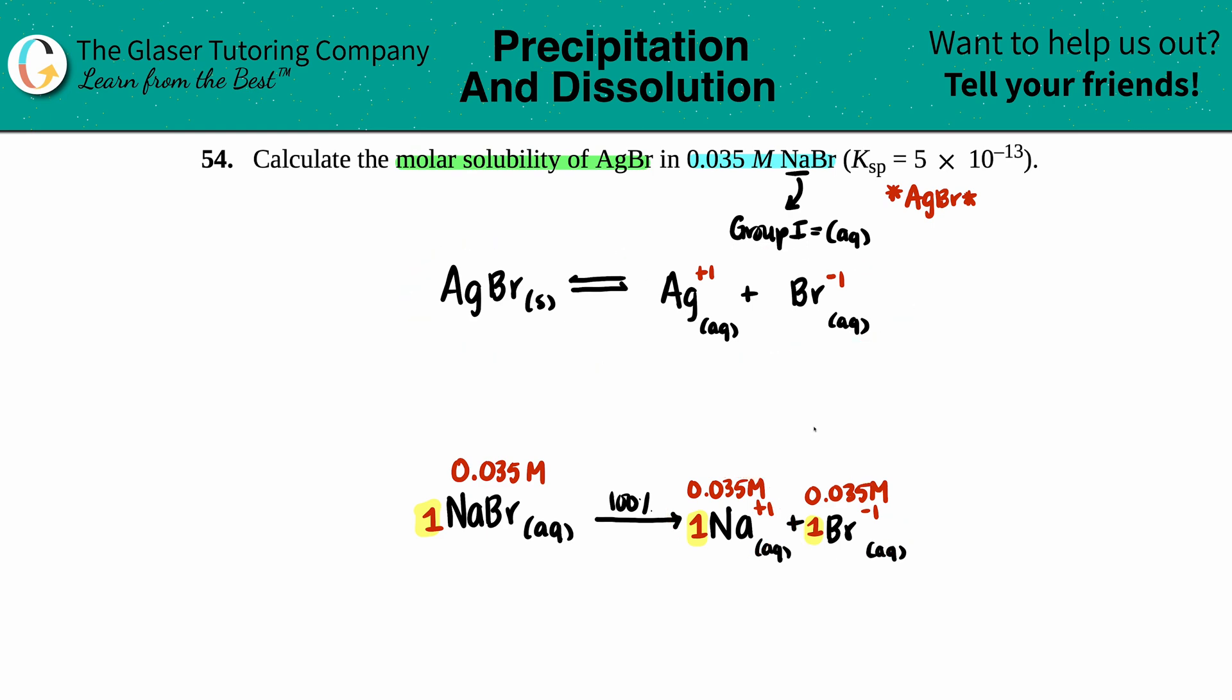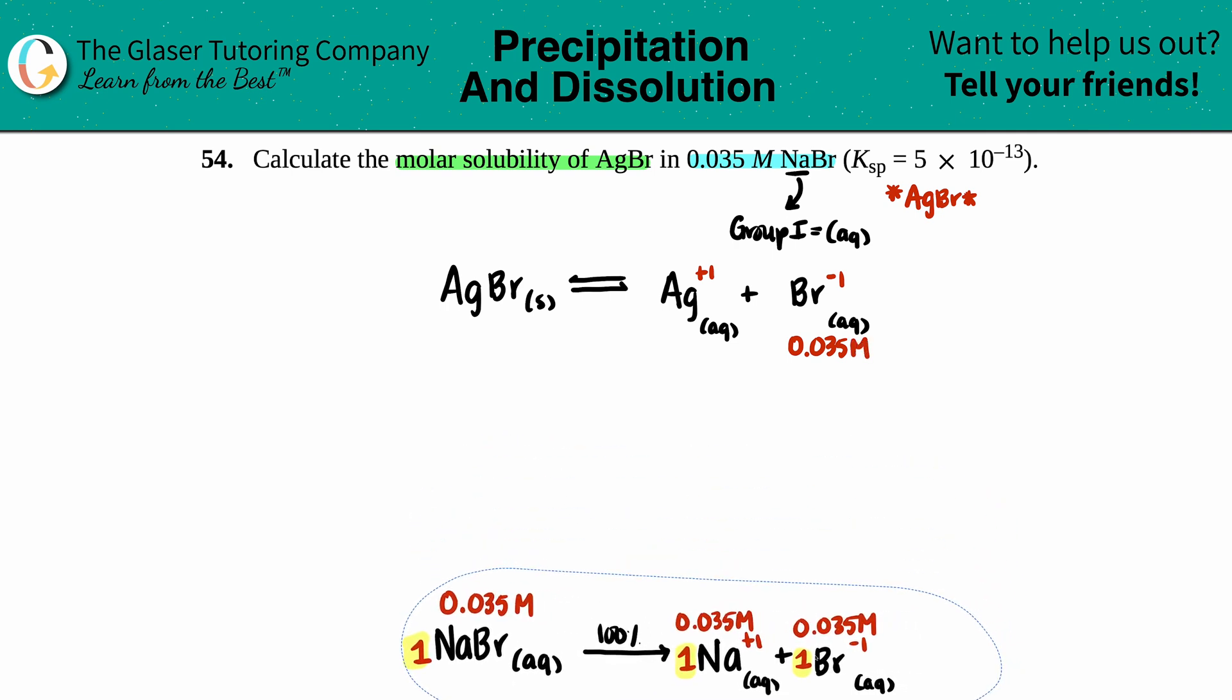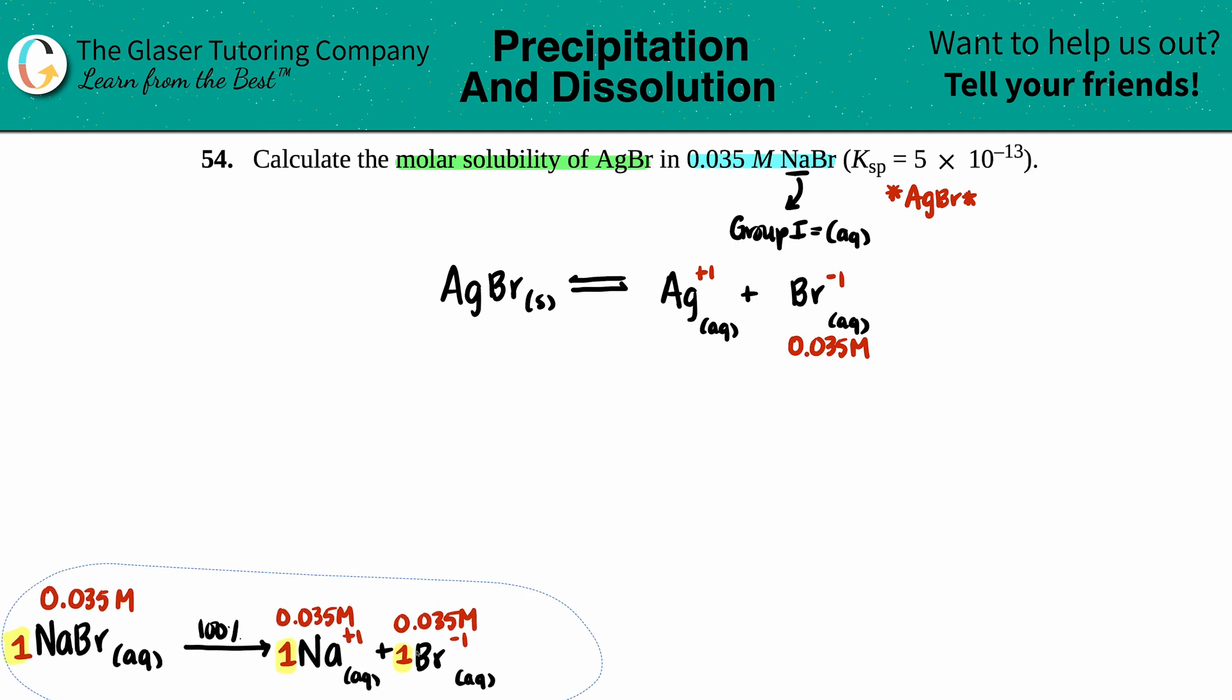But the question is, which one of these is going to help me out with this problem? Well, this is a common ion - you always choose the one that has the ion that's the same. So is the cation, the positive charge, the same, or the anion, the negative one? Yeah, it's the bromine. Since we already have 0.035 molarity of bromine, that means that's what I started with, and this would be 0.035 molarity.